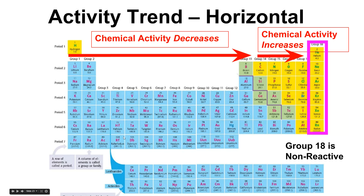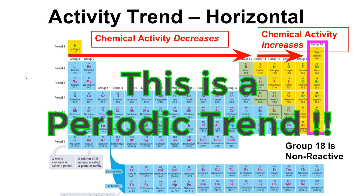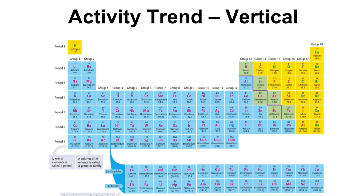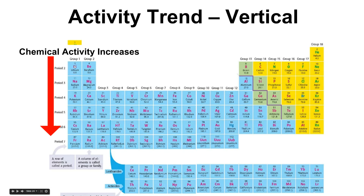One final thing: everything in group 2 is more reactive than everything in the transition metals, and all elements in group 1 are more reactive than all elements in group 2 — so potassium is more reactive than everything in group 2. As I go down group 1 or group 2, chemical activity increases — potassium is more reactive than sodium, calcium is more reactive than magnesium. We only use this trend when comparing within a group.